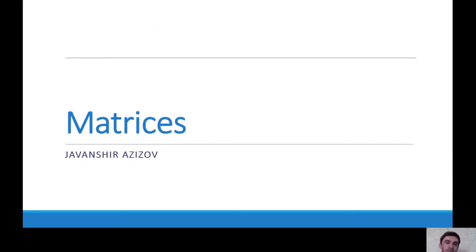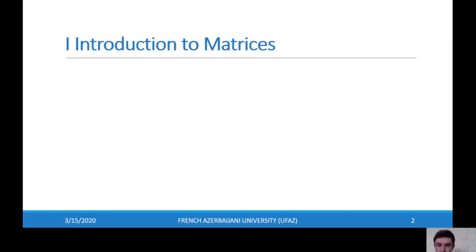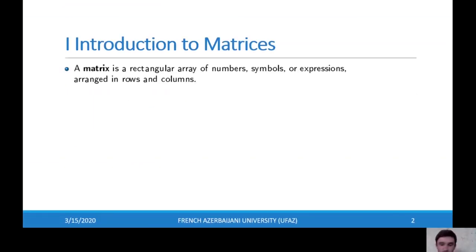But the main question is: what is the matrix? Okay, let's look at the definition. The definition says that a matrix is a rectangular array of numbers, symbols, and expressions.